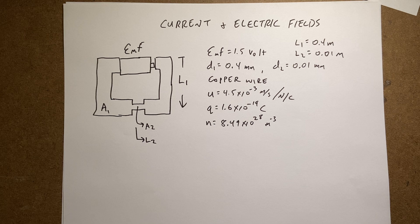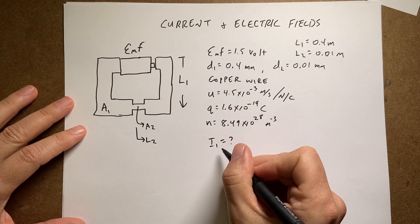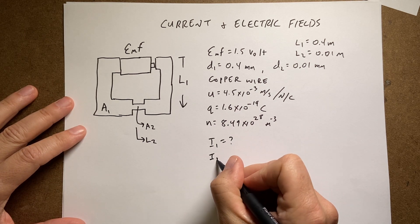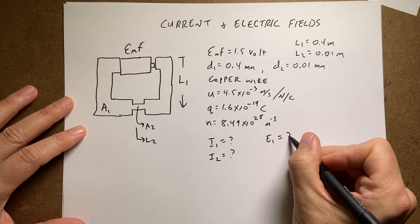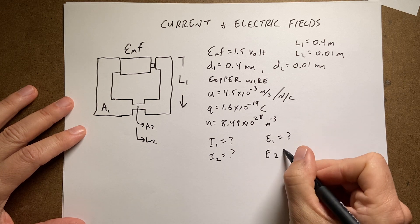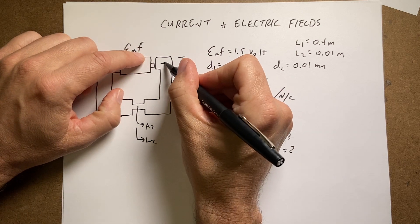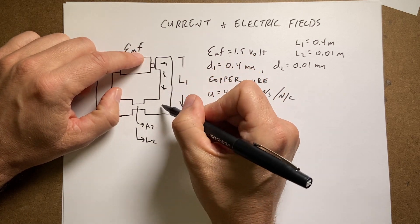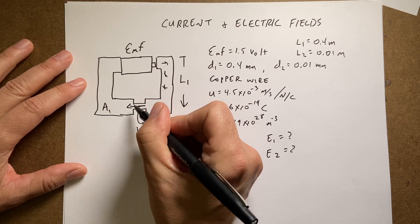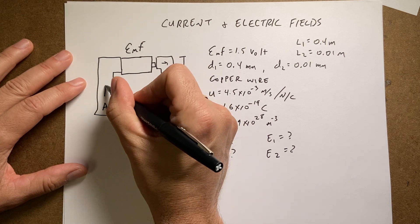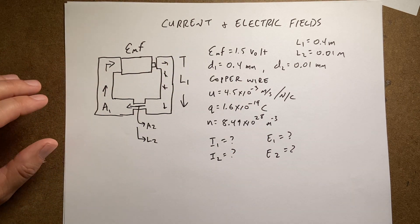I want to find: what is the electric current I1? What about I2? What about E1 and E2? E1 is the electric field in part 1, E2 is the electric field in part 2, and then again back to part 1. So I want to find all of that.